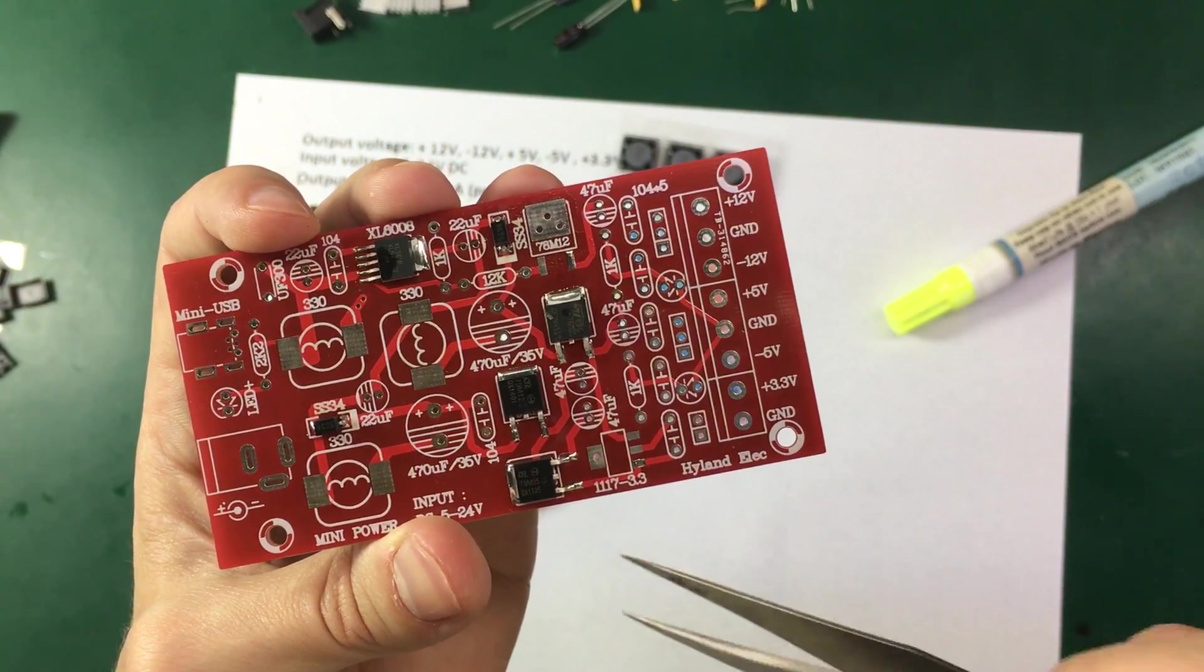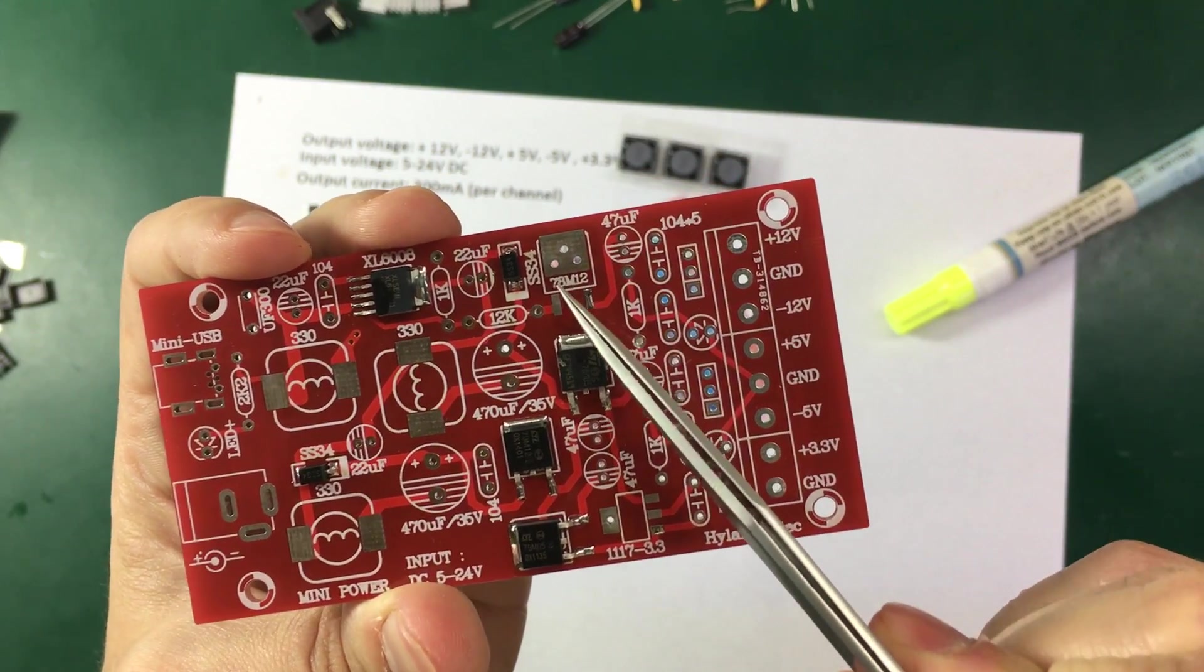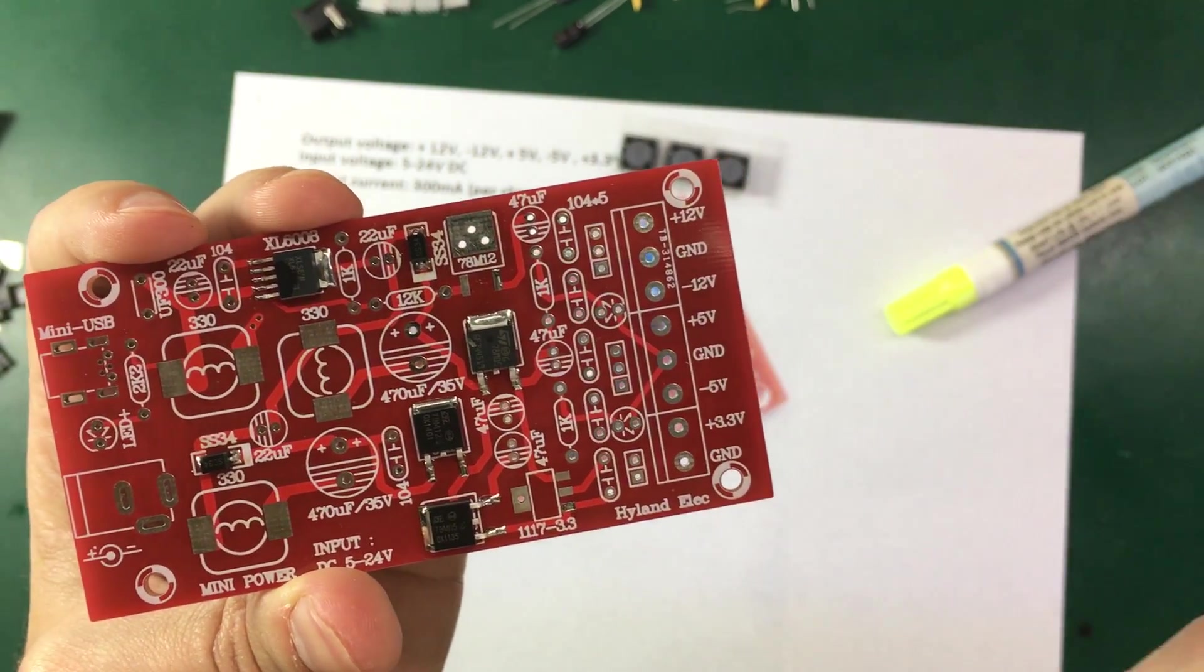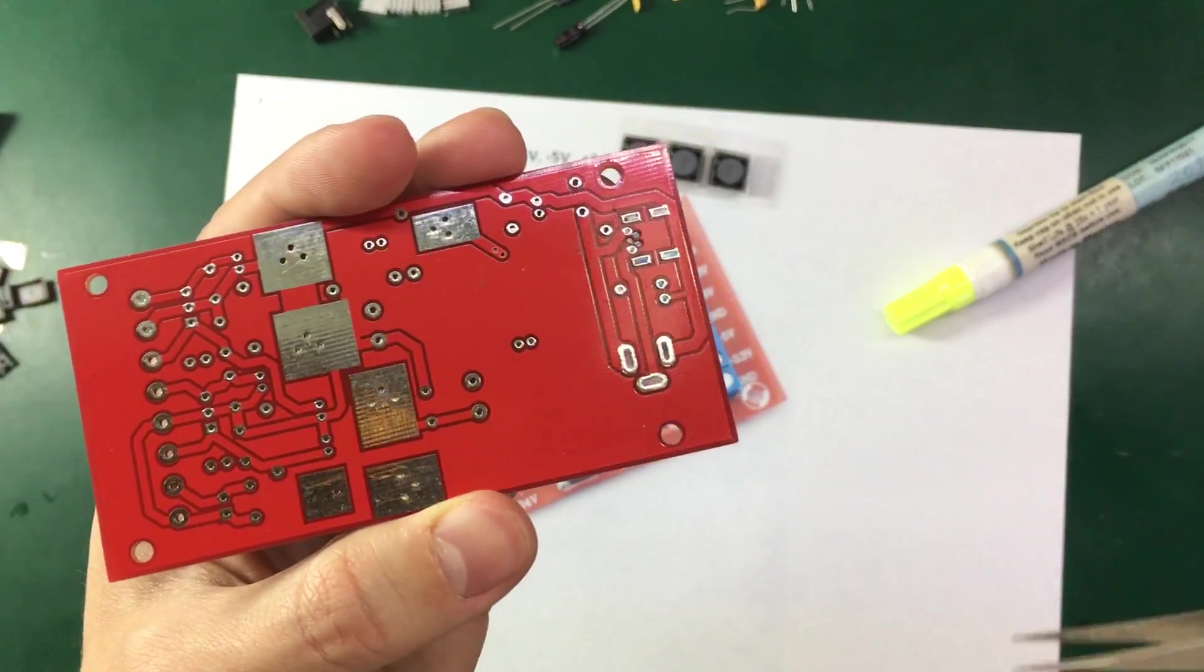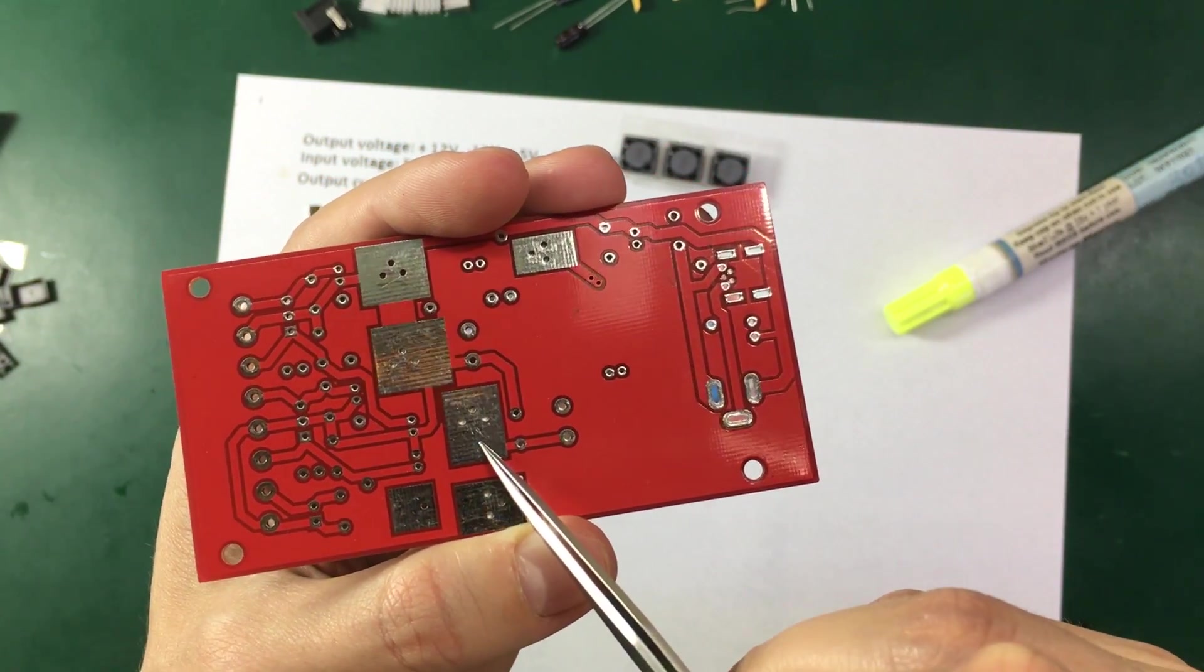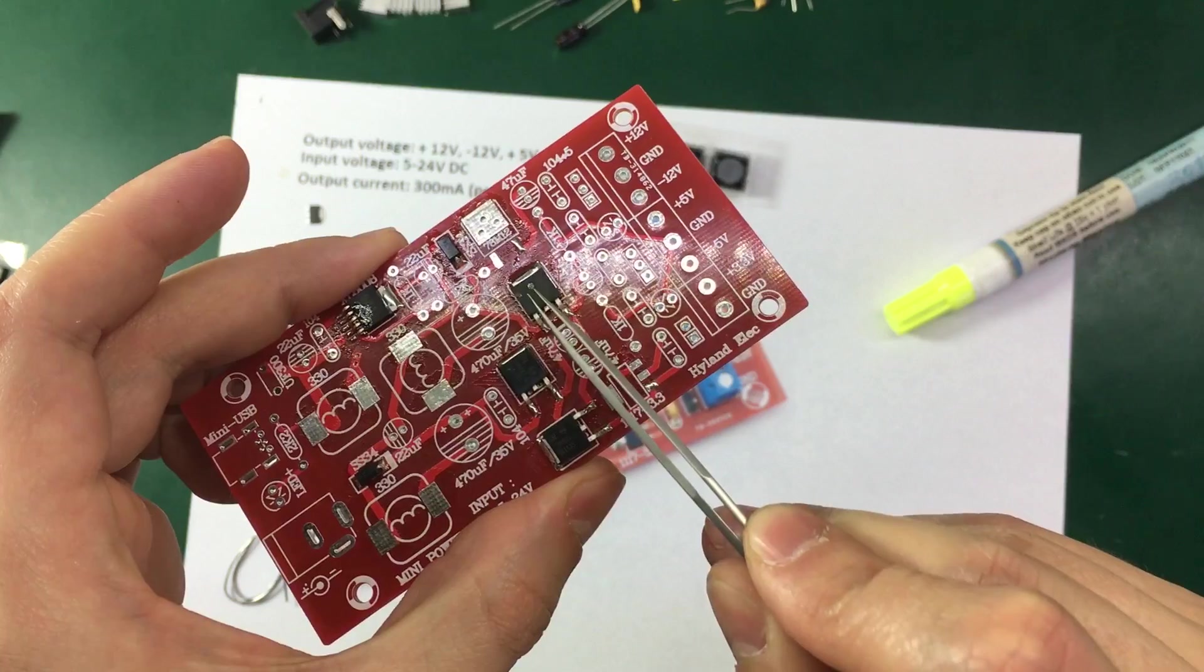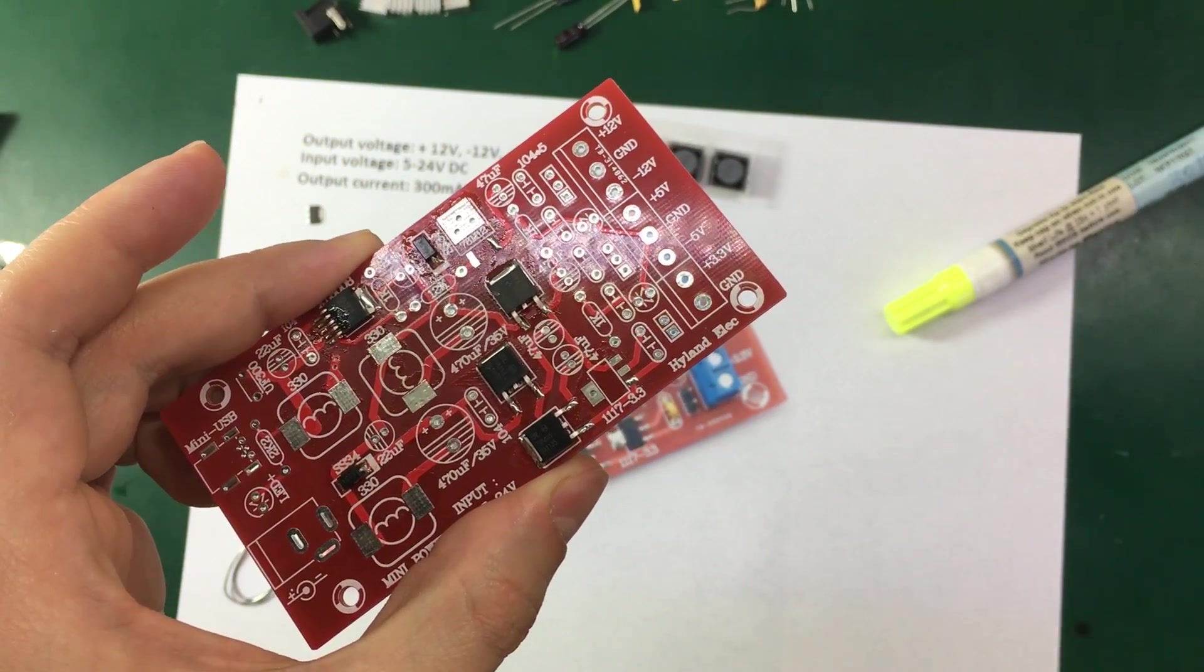There's one more thing I would like to show you regarding soldering these regulators. We can see here the designer of this PCB left these plated holes in the pads for these regulators. So that after we're finished soldering on top we can go on the back side of this PCB. And just flow some solder onto these pads. And the solder will actually flow through these holes. And perfectly solder the metallic connection on the back of these packages.